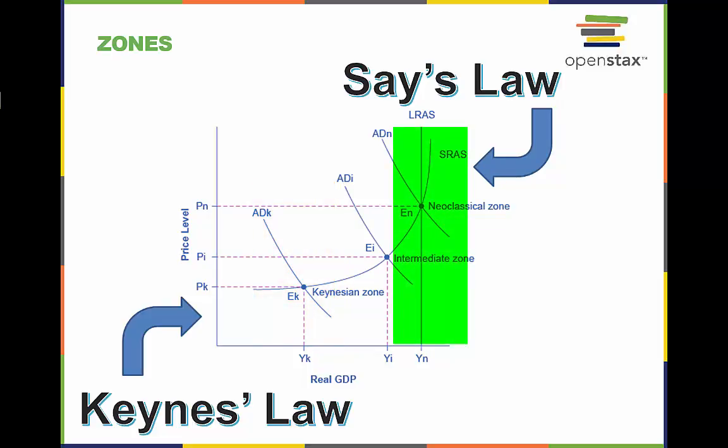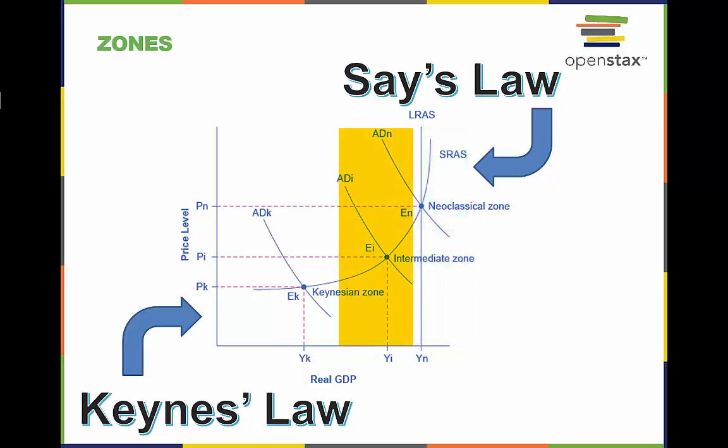Near equilibrium EN in the Neoclassical zone, at the far right of the aggregate supply curve, small shifts in aggregate demand either to the right or to the left will have relatively little effect on the output level YN, but instead will have a greater effect on the price level. In the Neoclassical zone, the near-vertical aggregate supply curve close to potential GDP largely determines the quantity of output. In the intermediate zone around equilibrium EI, movement in aggregate demand to the right will increase both the output level and the price level, while movement to the left would decrease both.